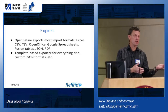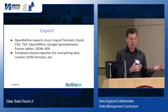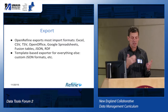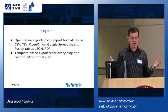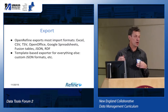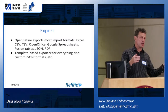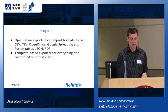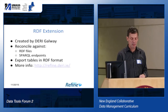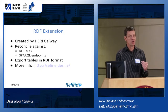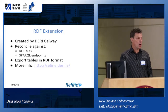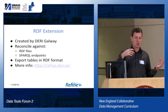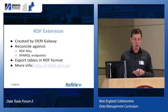On the output side, OpenRefine basically supports the same set of formats as input, additionally supporting some custom JSON and tabular formats. You can reorder columns quickly by dragging and dropping and click them on and off. So even if you just wanted to import a spreadsheet, scramble the columns, and drop half of them, you could do that really quickly. If you're working with linked data, there is an extension for dealing with RDF done at Derry and Galway, which allows you to do reconciliation against RDF files and SPARQL endpoints as well as export your data as RDF triples.